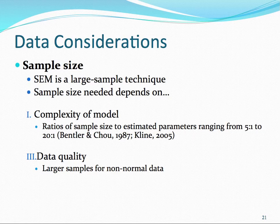In fact, Kline states in his book that a desirable goal is to have the ratio of the number of cases to the number of estimated parameters be 20 to 1.